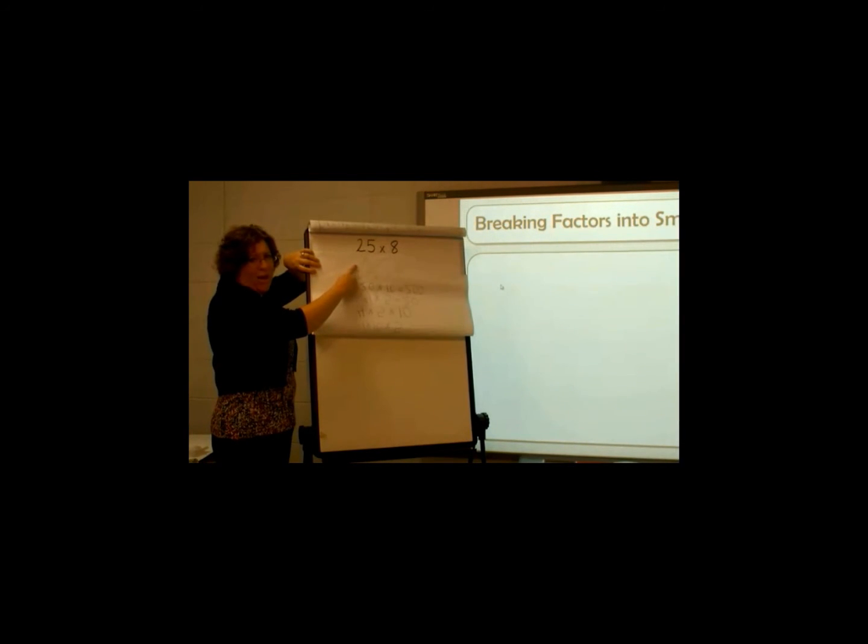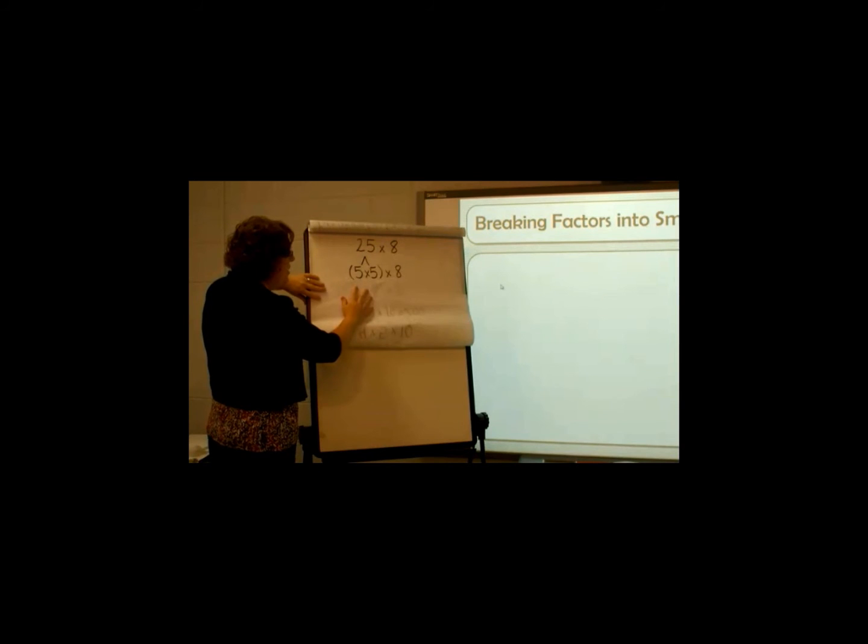I don't know any two-digit multipliers in terms of basic facts. So this time, I'm going to decompose that 25 into 5 times 5 and then I'm still going to multiply by 8. So my new problem becomes 5 times 5 times 8.